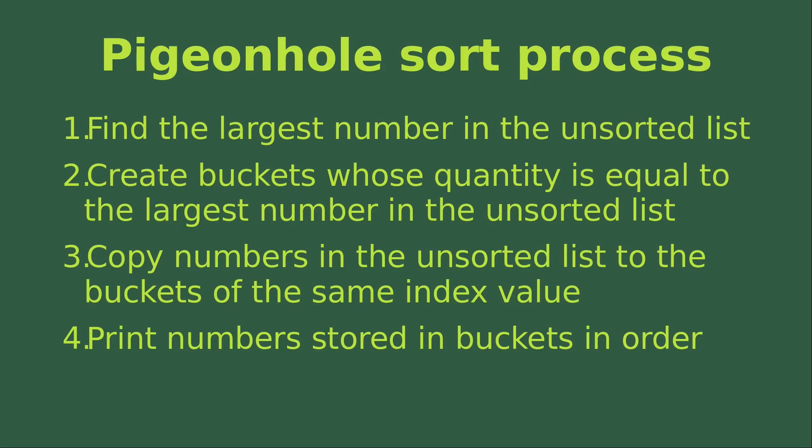The first step is to find out the largest number in the unsorted list. Then I have to create buckets whose quantity is the same as the largest number in the unsorted list. Then I have to copy the numbers from the unsorted list to the buckets of the same index value. Finally, I have to print out the numbers stored in the buckets in the order of the indices.